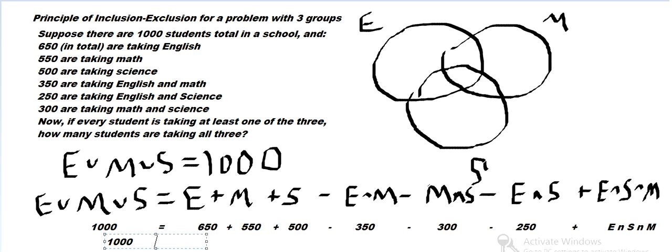1,000 equals 650 plus 550, 1200, 1700, minus 350, 1350, 1050, that's 250, 800. 800 plus the intersection, or plus, we can write that out. 800 plus the intersection, so the intersection, that tells us what the intersection is. 800 plus the intersection is 1,000, so that's 200.